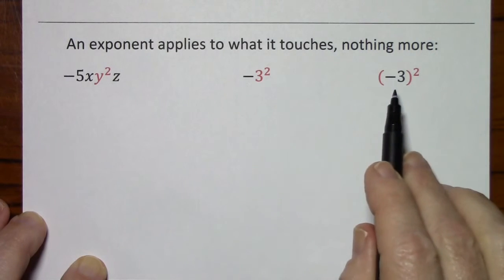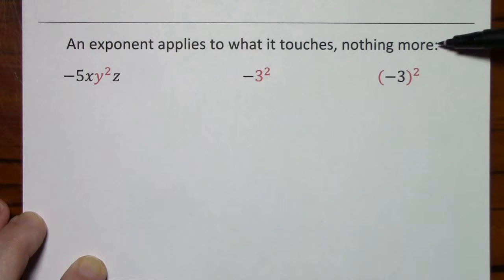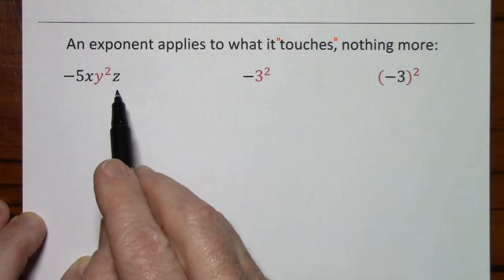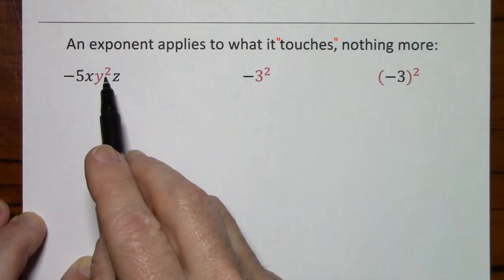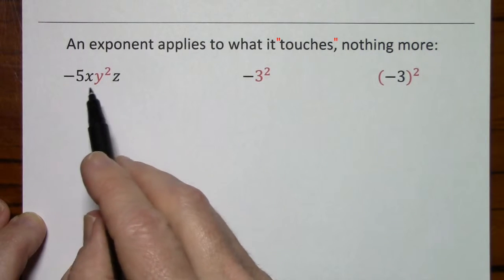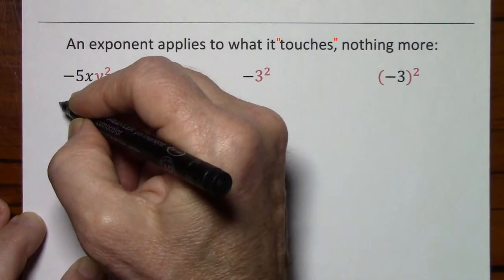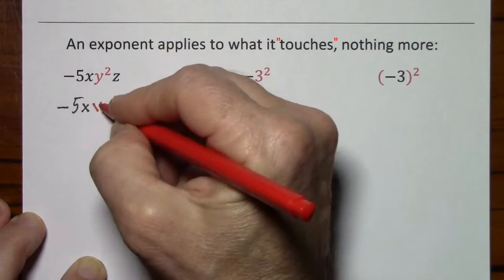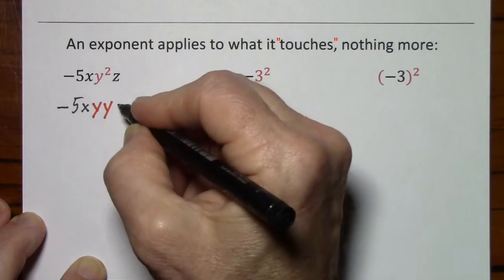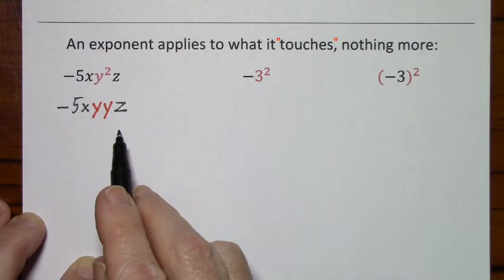These two situations can cause a little confusion. So I just want to emphasize that the exponent applies to what it touches and nothing more. With this expression, it's a little bit easier to see that the exponent of 2 only applies to the y. So if I write this out in expanded or factored form, we would show it in this form.